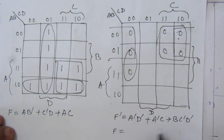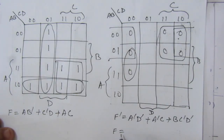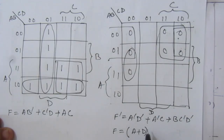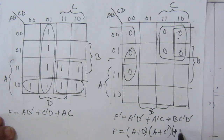We combine the zeros: this will be one combination, this will be another combination, and this will be the third term. So f' = a-bar d-bar + a-bar c + b c-bar d-bar. Taking the complement using De Morgan's theorem and simplifying, f = (a + d)(a + c-bar)(b-bar + c + d). This is the simplified product of sums expression.